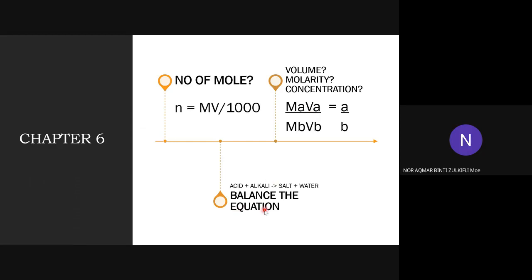You need to master your skill on balancing the equation. The equation will provide the acid and alkali. You must memorize that any acid reacting with alkali will produce water. The water molecule is H2O. For salt, you need to find it by yourself — we will discuss that after this.